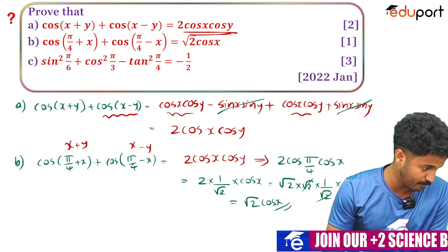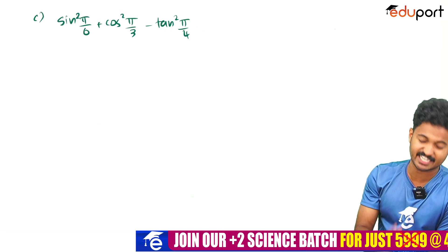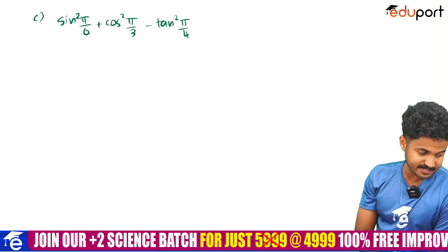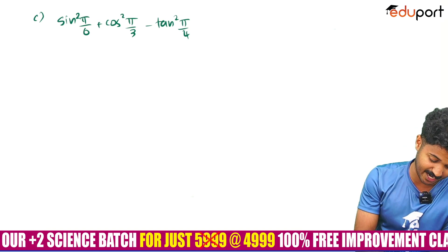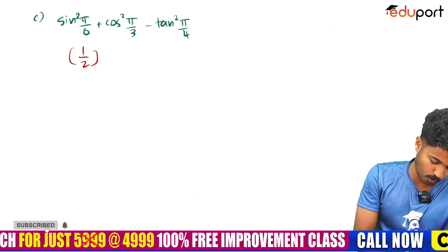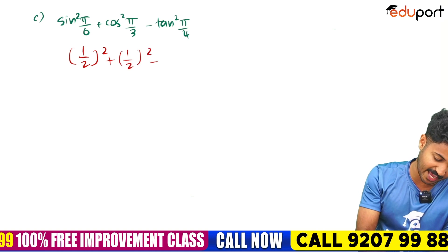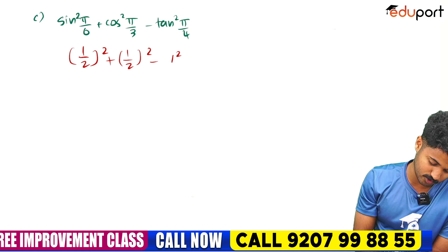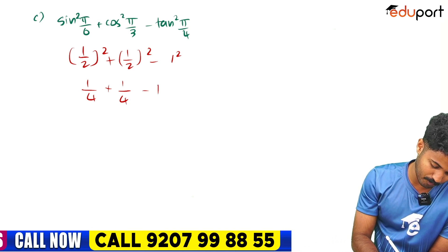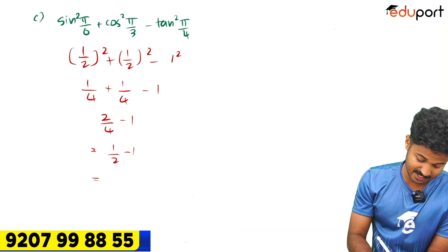Now evaluate: sin²(5π/6) + cos²(5π/3) − tan²(π/4). sin(5π/6) means sin(30°) = 1/2, so sin²(5π/6) = 1/4. cos(5π/3) means cos(60°) = 1/2, so cos²(5π/3) = 1/4. tan(π/4) = 1, so tan²(π/4) = 1. The answer is 1/4 + 1/4 − 1 = 1/2 − 1 = −1/2.